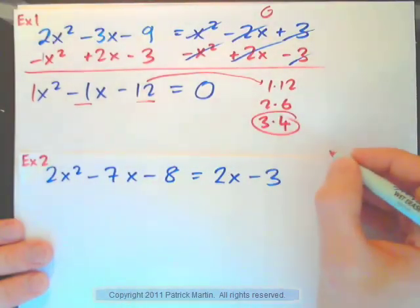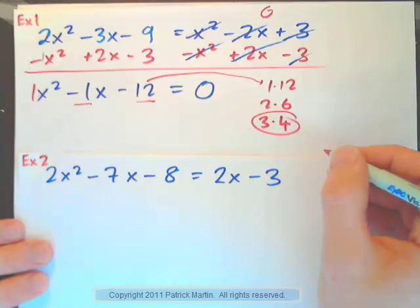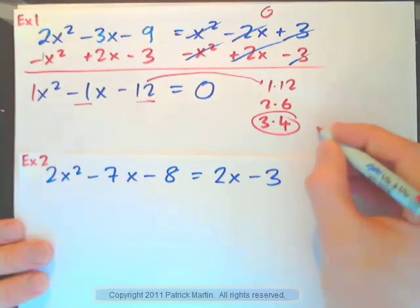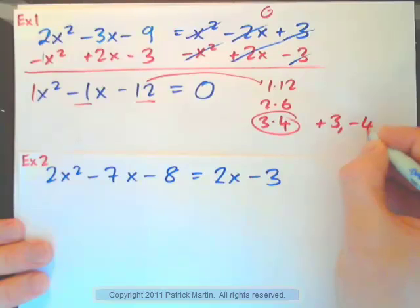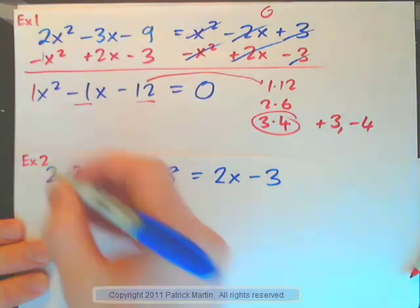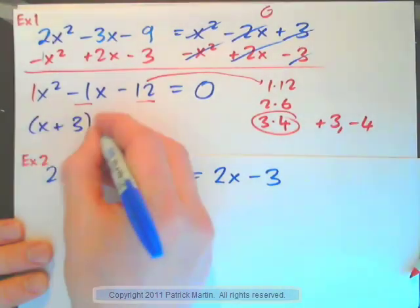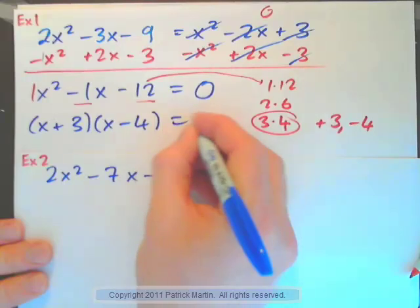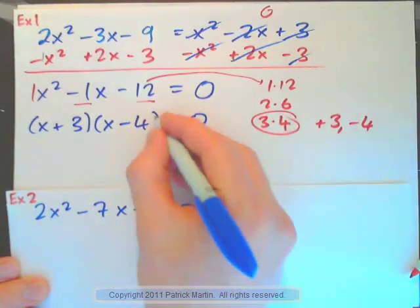Two numbers that multiply to negative 12 and add to negative 1. I would work with these two numbers. Positive 3, negative 4, right? Add them, negative 1, multiply them, negative 12. So, x plus 3 times x minus 4 equals zero. Solve that.